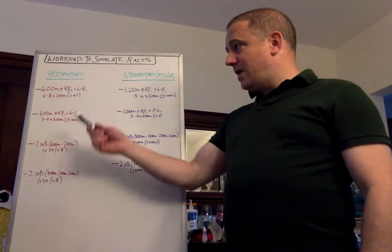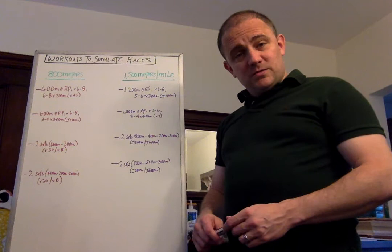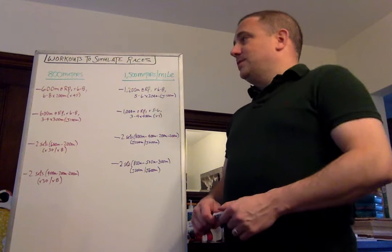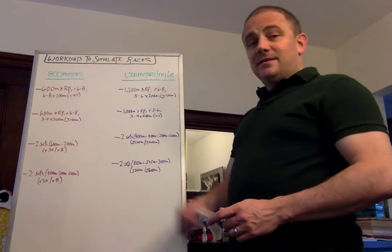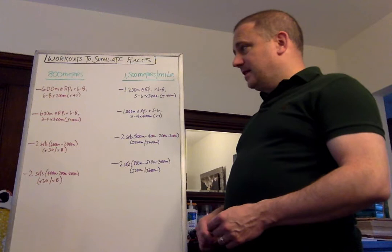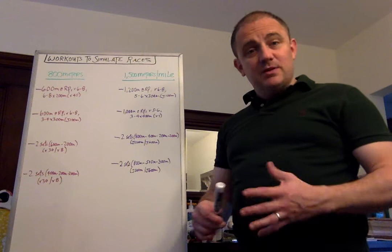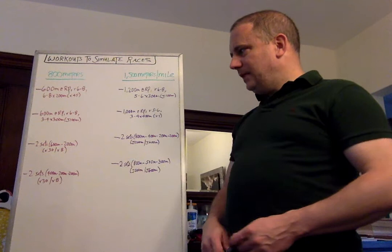So after the 600 meter effort, with a six to eight minute active recovery, you do a three to four by 300 meter efforts at goal 800 meter pace with a 100 meter jog, which would probably be about 45 seconds or so, or a minute. Again, this is another intense workout. I would do this with a little bit older for the more experienced athletes. I would start everybody else at the 200s and then kind of build from there. This is another great workout or another great way of simulating a race environment for 800 meters.